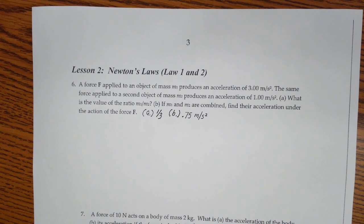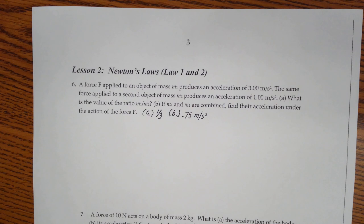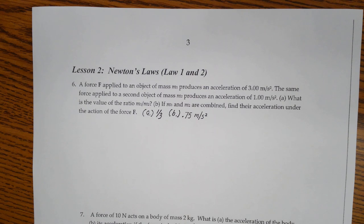Force F applied to an object produces m1 to accelerate at 3 meters per second squared. The same force applied to a second object of mass m2 produces an acceleration of 1 meter per second squared. What is the value of the ratio m1 over m2?